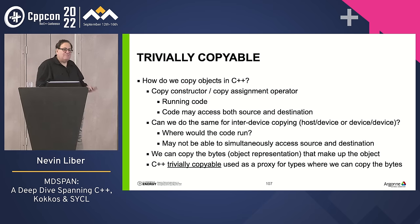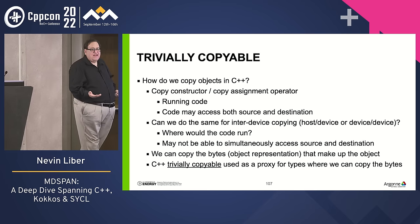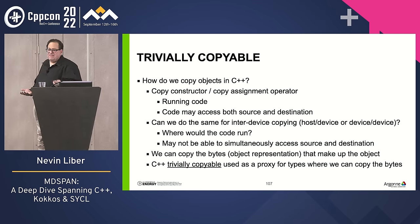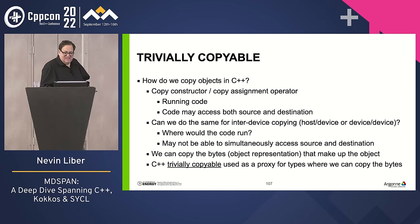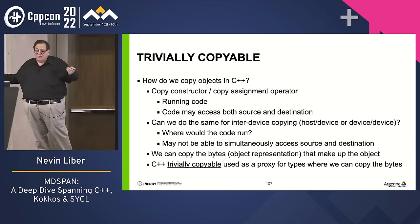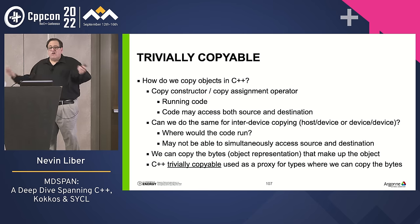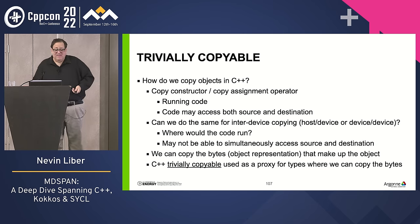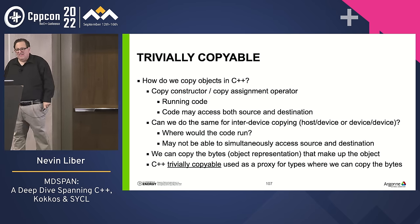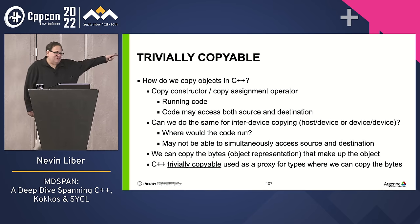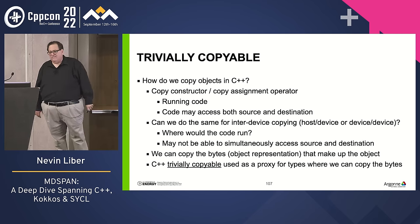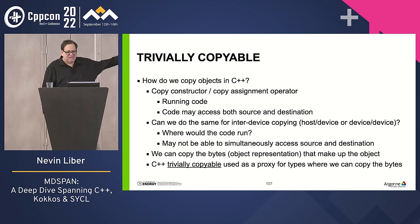For r11, I'm now an author on the paper. We changed all sizes back from ptrdiff_t (span used signed) to size_t, and made sure we were more explicit about trivially copyable. Trivially copyable is important for what we do in HPC: normally C++ copies use a copy constructor or copy assignment operator, which runs code that may access memory in both source and destination. But for inter-device copies — host to device or device to device — where would that code run? The only thing we know we can do is memcpy the bytes, and in C++ the only proxy for that is trivially copyable.